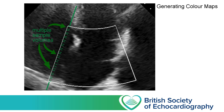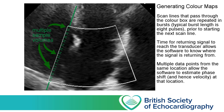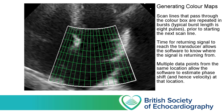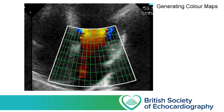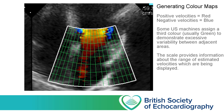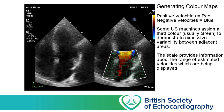The machine can't estimate phase shift from a single piece of information — it requires multiple values from the same location. So those scan lines that pass through the box are rapidly repeated, typically around 8 times, before moving on to the next scan line. Once there's been enough time for the scan line to sweep through the colour box, we end up with a grid of estimated velocities which can then be represented as a colour. By convention, positive velocities moving towards the transducer are represented with a shade of red, whereas negative velocities away from the transducer are represented with shades of blue, with brighter shades representing faster velocities.